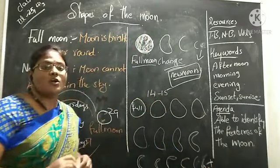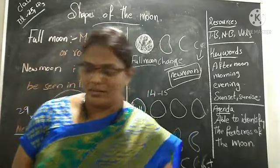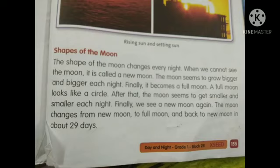You can observe the pictures in your volume back page; in your textbook also you have them. Children, open your textbook to page number 155 — Shapes of the Moon. The shape of the moon changes every night. When we cannot see the moon, it is called a new moon. The moon seems to grow bigger and bigger each night.